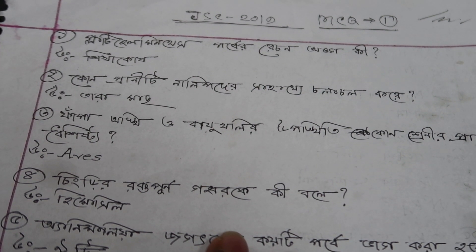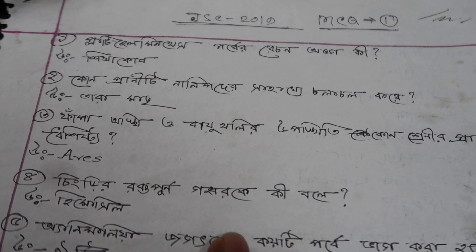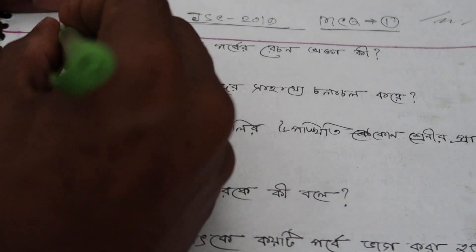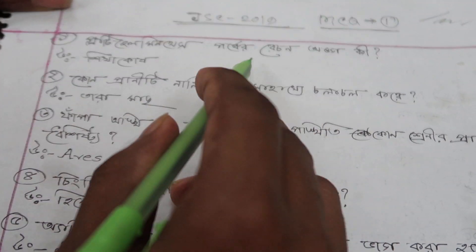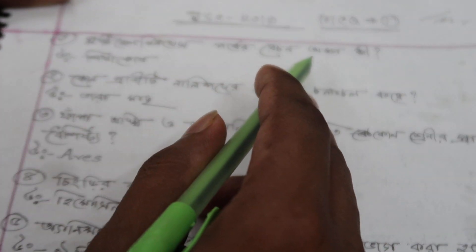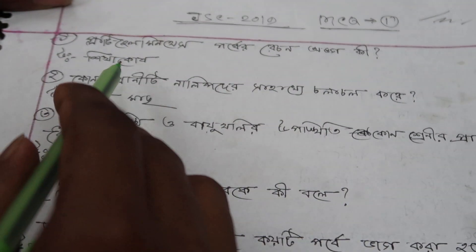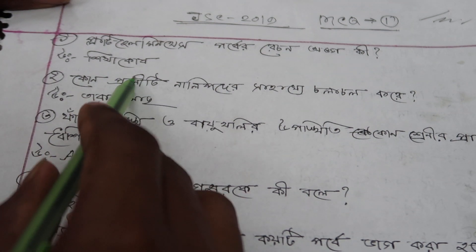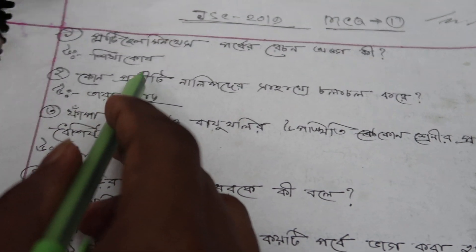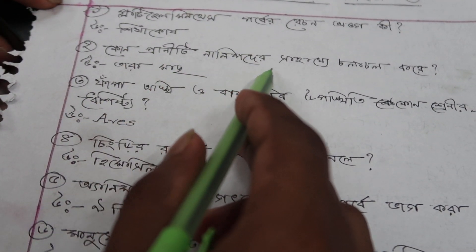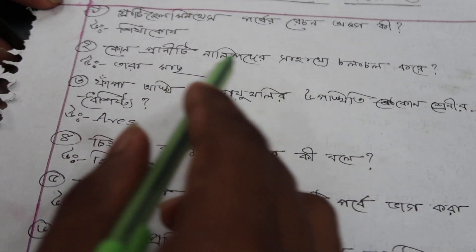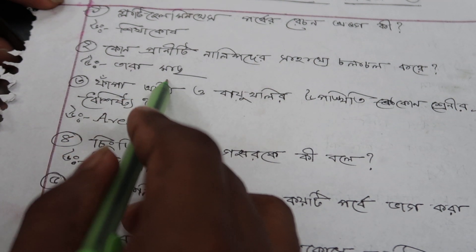Number 1: Platyhelminthes — Pervere Rechonango Ki — Uttar Shikha Kosh. Number 2: Which Praniti Nalipothir Shajje Chalachal Kare? Answer: Taramas.